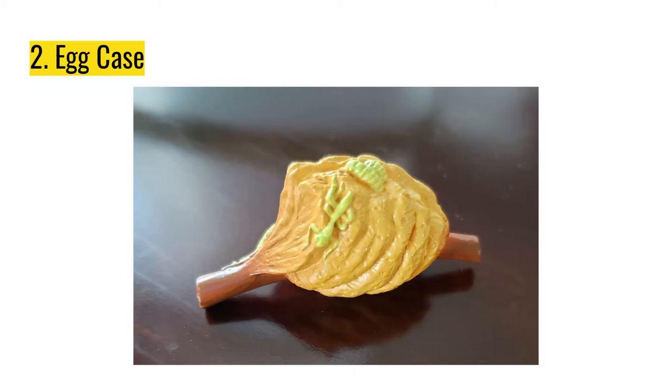The larvae actually hatch from the egg inside the egg case. They spend this entire stage inside the egg case hidden and safe. The larvae are cream in color with round bands and they have 10 to 12 body segments.